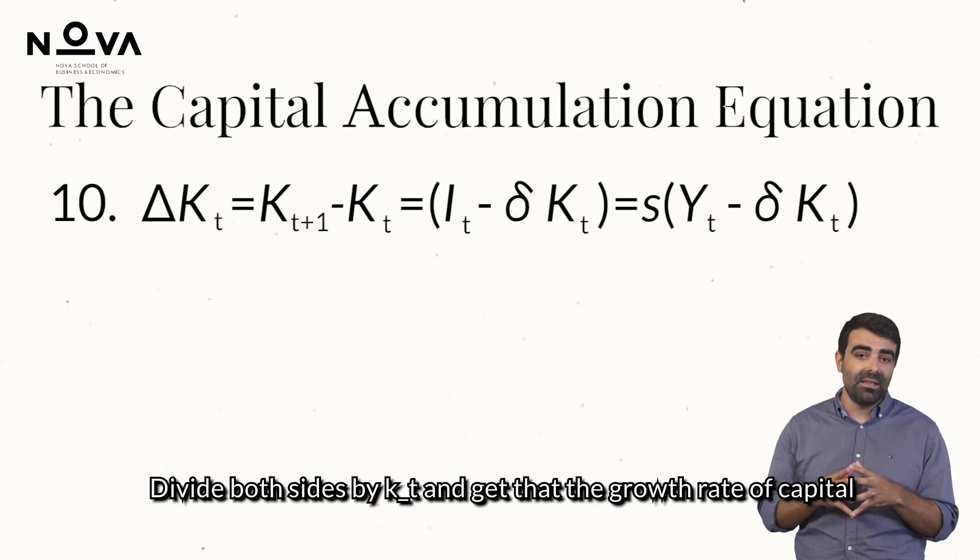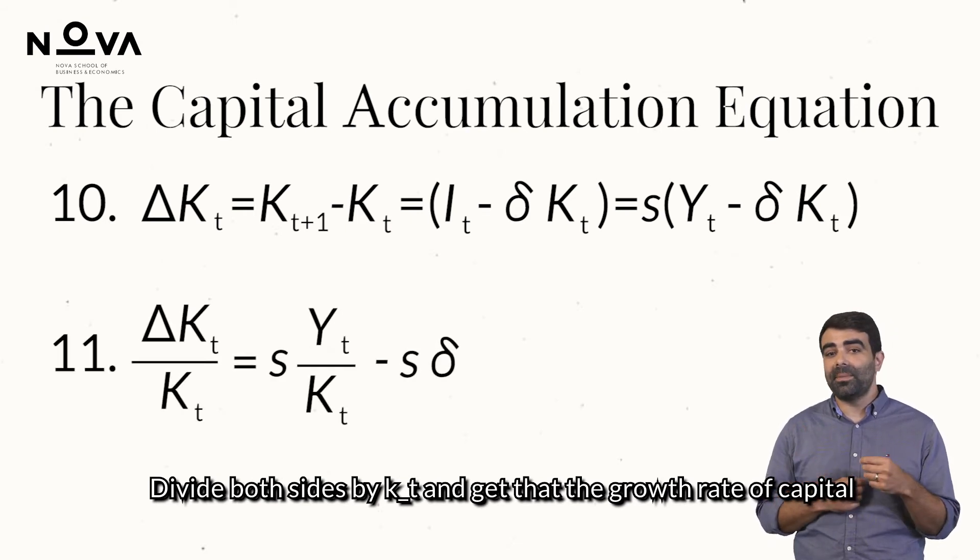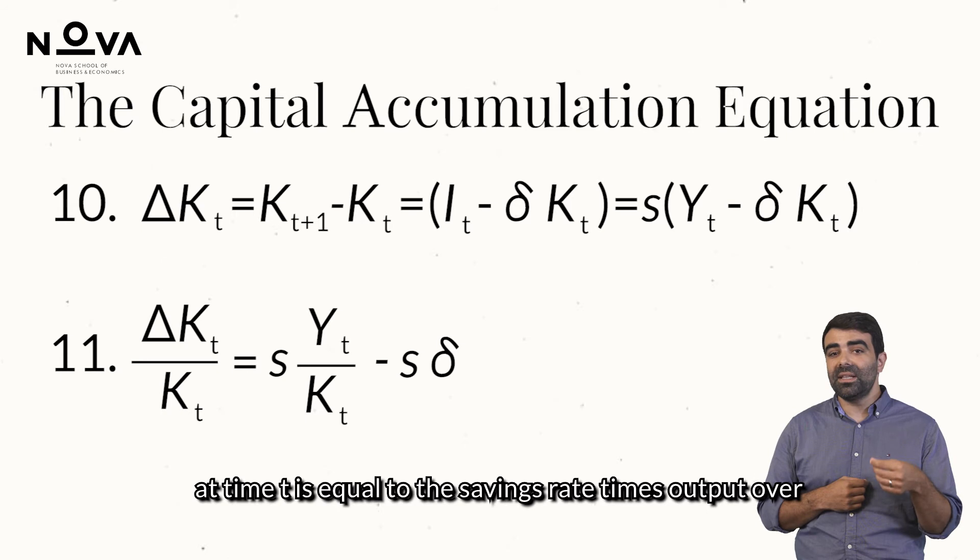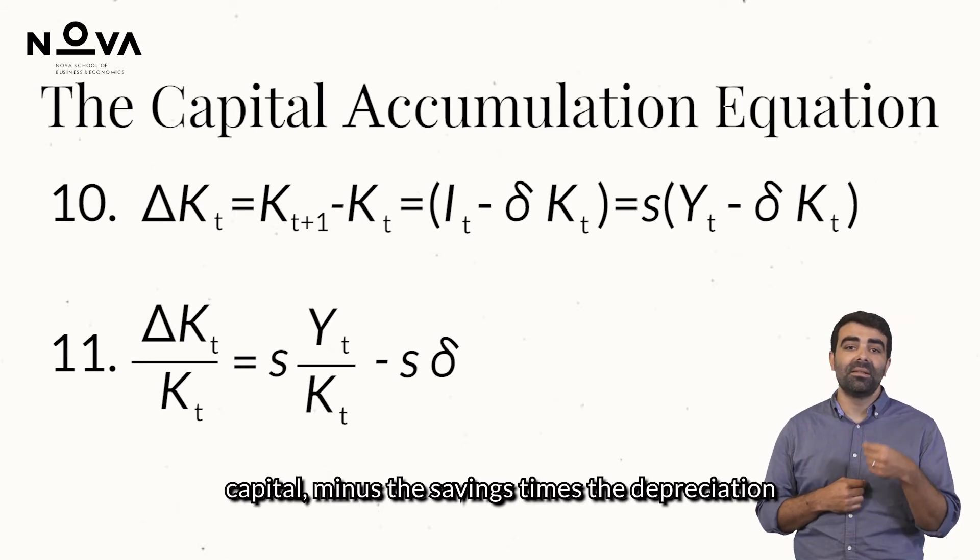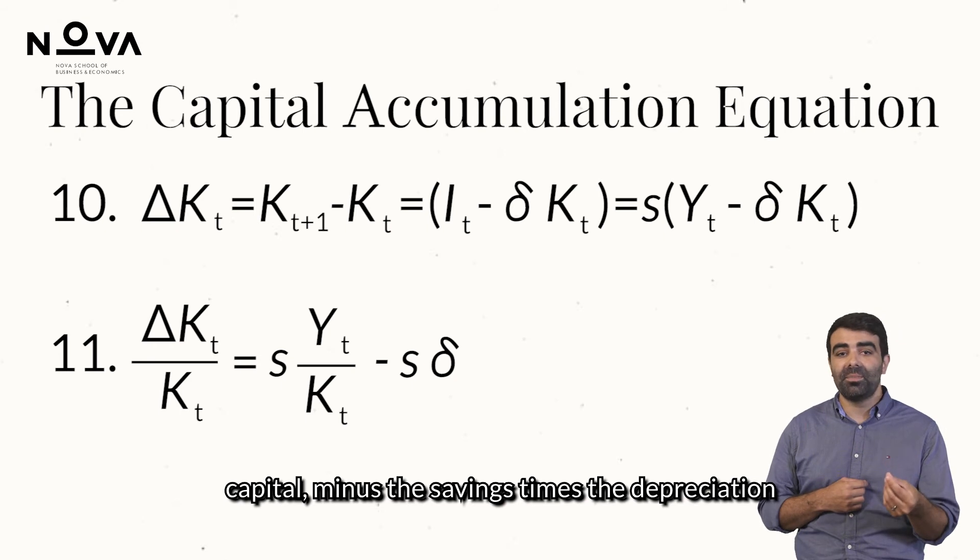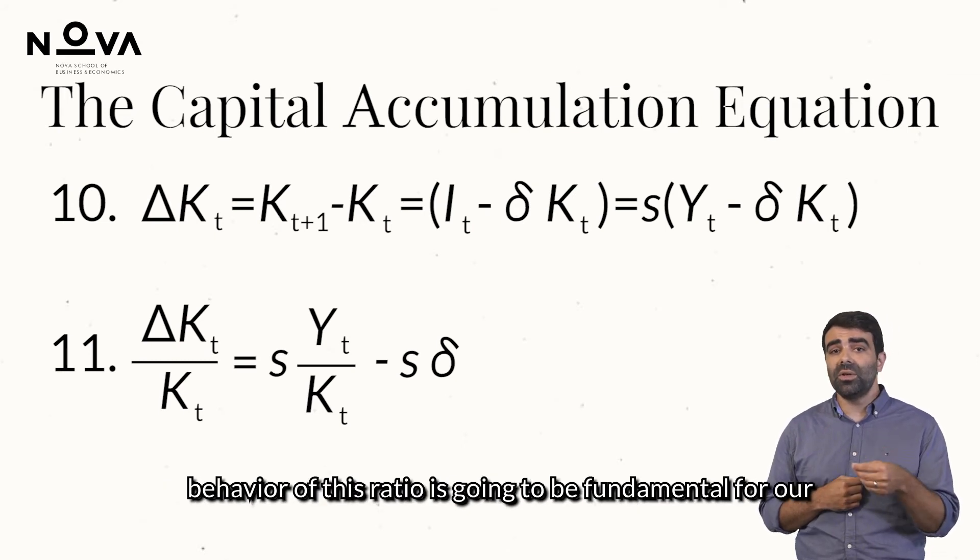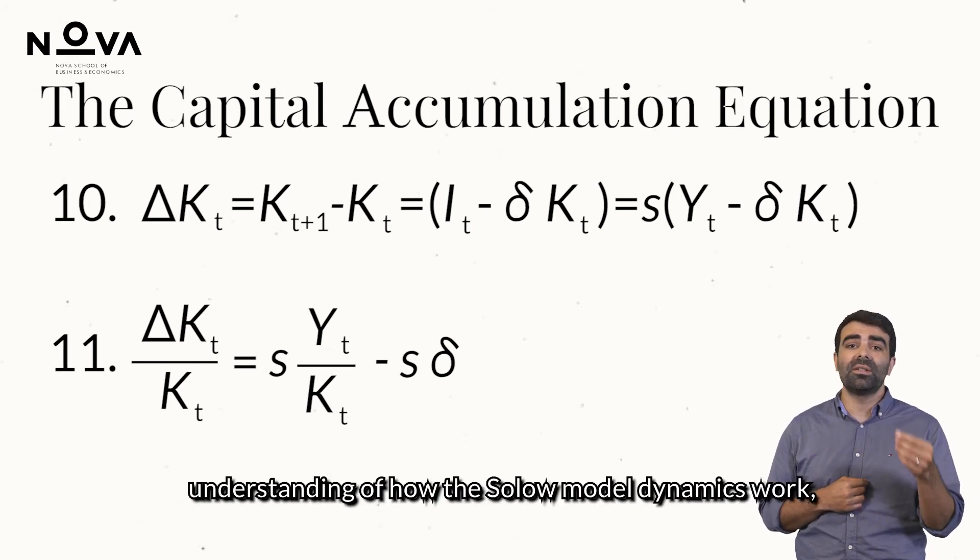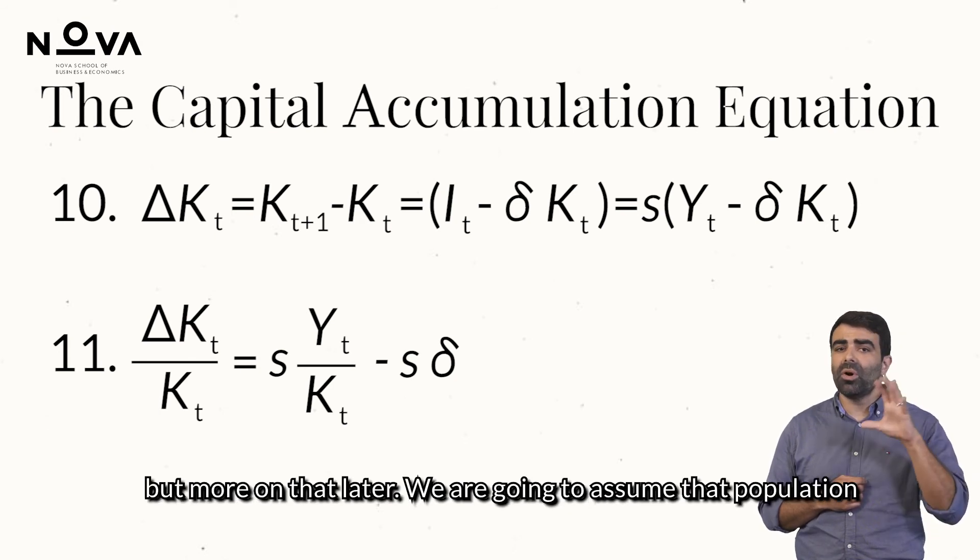We now use the capital accumulation equation and this last result to get that the change in capital which is given by kt plus 1 minus kt is equal to investment at time t minus delta kt, which is equal to s times yt minus delta kt. Divide both sides by kt and get that the growth rate of capital at time t is equal to the savings rate times output over capital minus the savings times the depreciation rate.